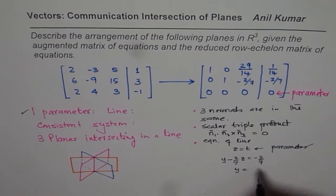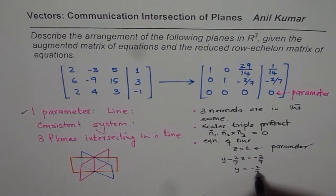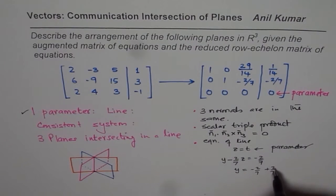Now from here we get Y minus 2/7 Z equals -2/7. That means Y equals -2/7 plus 2/7 Z. And Z is T, so we can write T instead. So we get Y in terms of T.